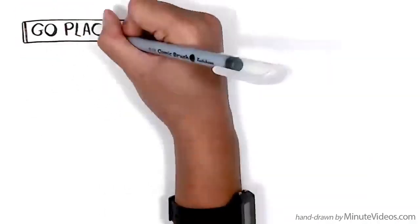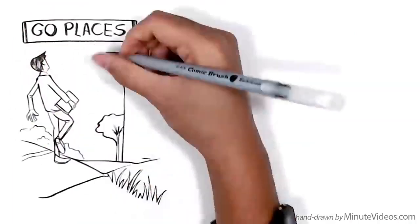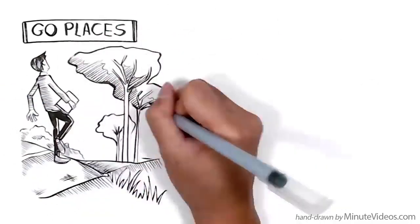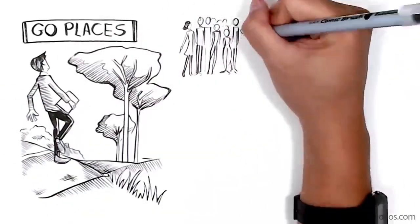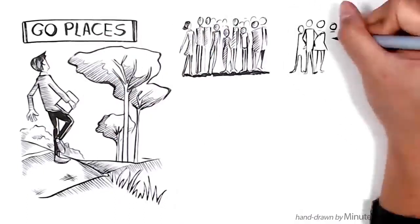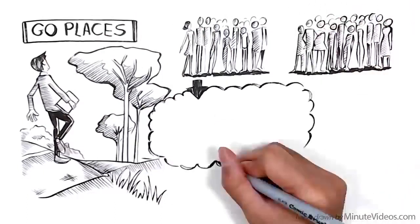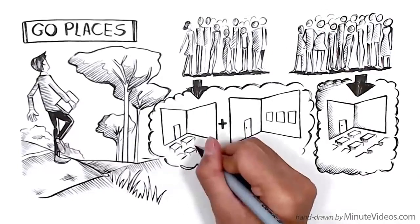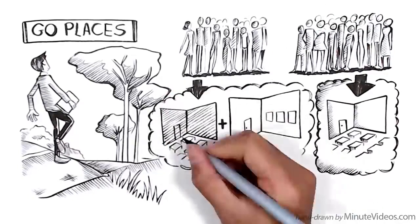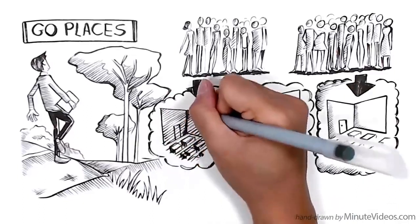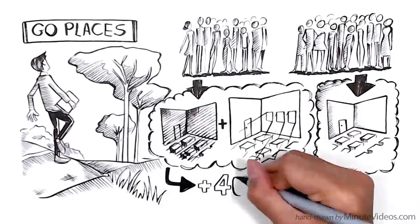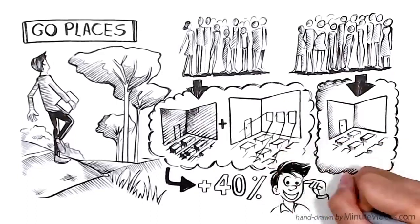Go places: You can create deeper memories of a subject by learning in a richer environment that offers more visual clues. In an experiment, two groups of students had to remember random words. One group changed the classroom while studying. The other didn't. The group that studied in two different rooms, one was small and windowless, the other big and bright, was 40% more likely to recall the words later.